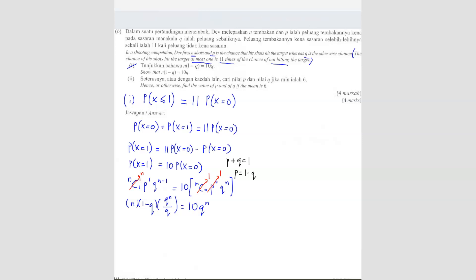So the question wants you to show what? I write here. N(1 minus Q) equals to 10Q. So this part we already have in front here. So the only thing we have to remove is this guy. So we can bring the other side.